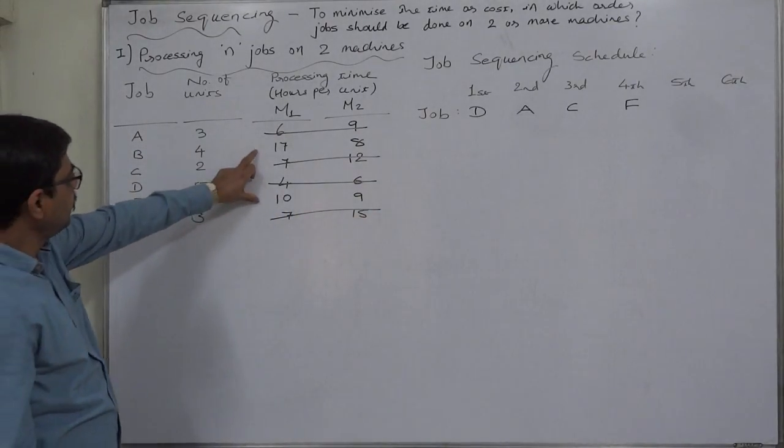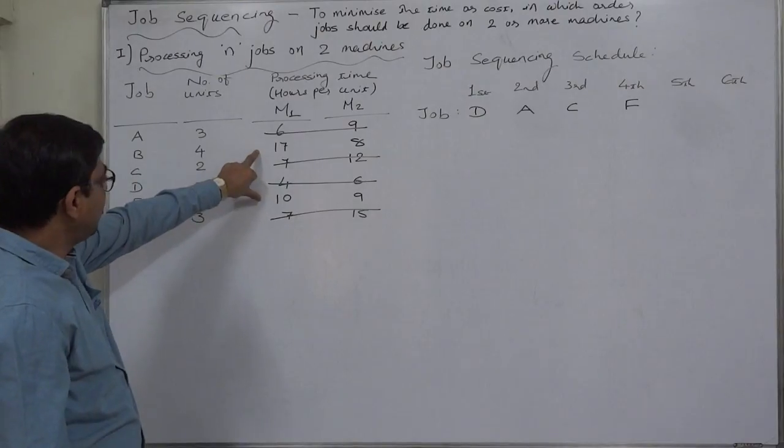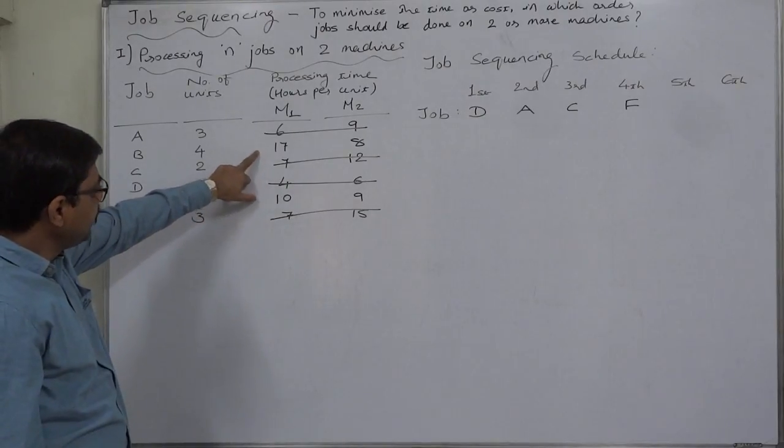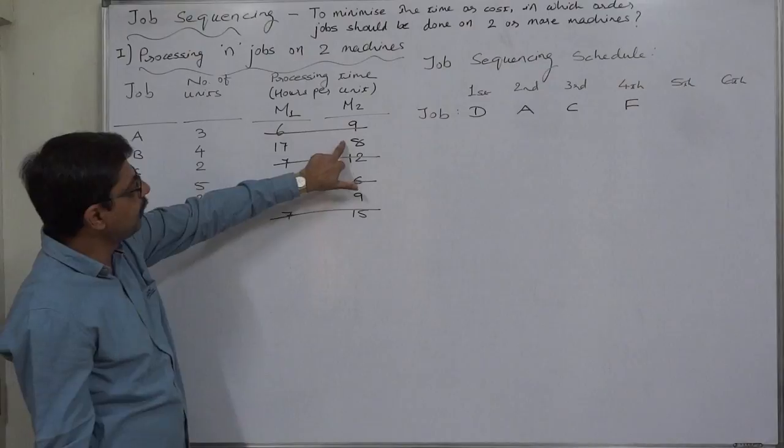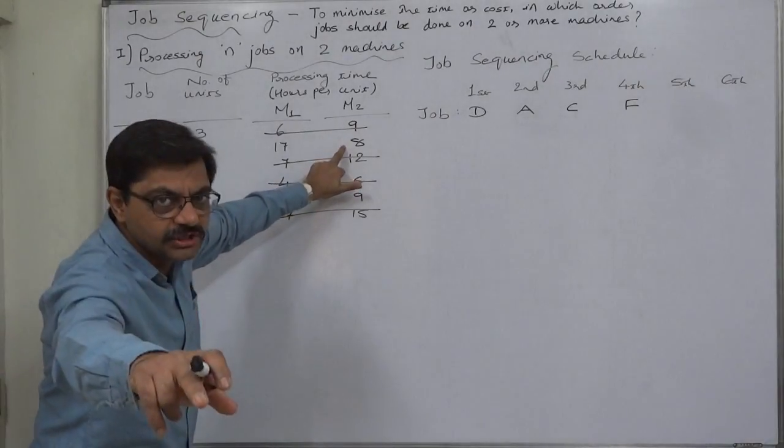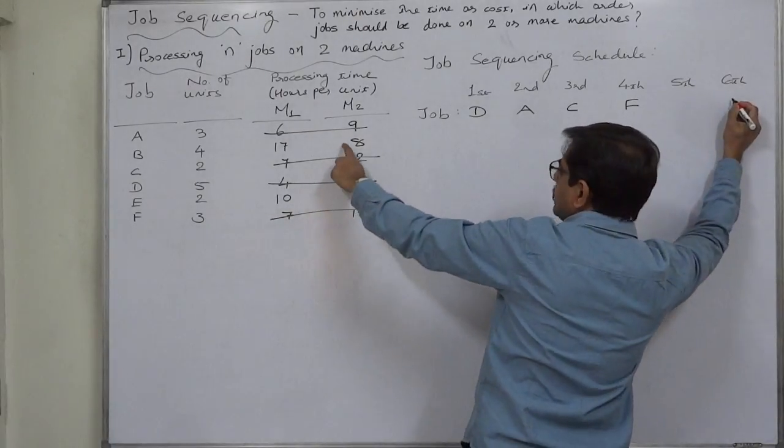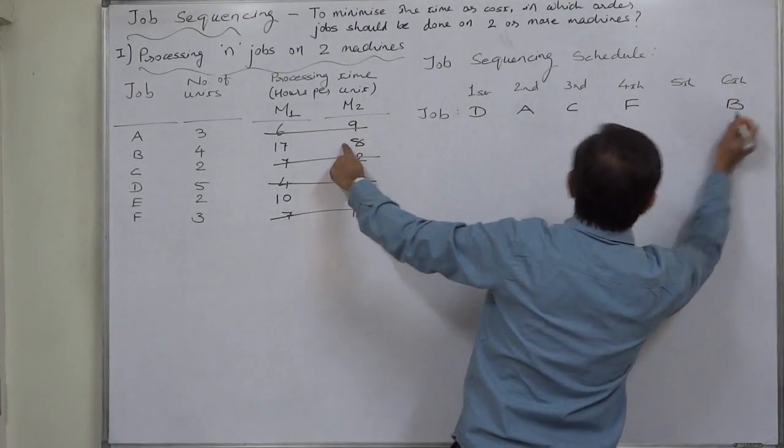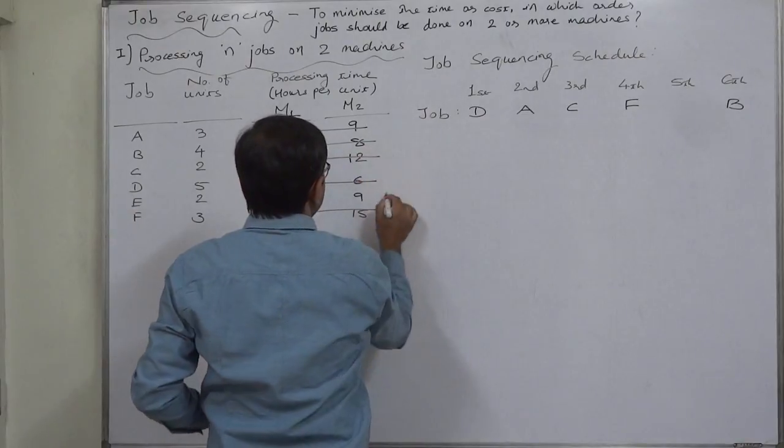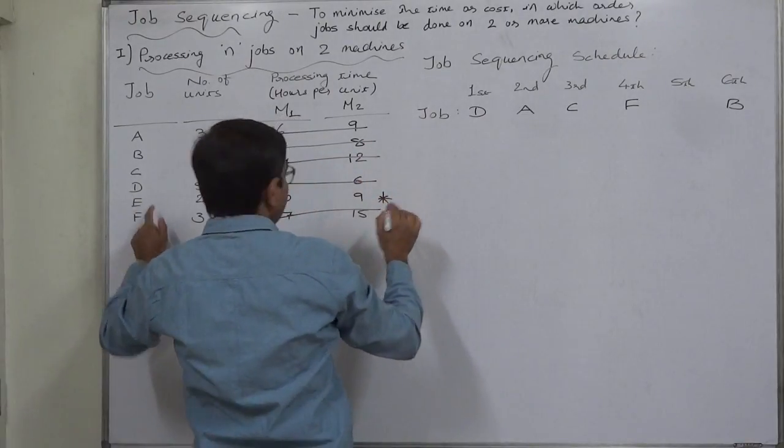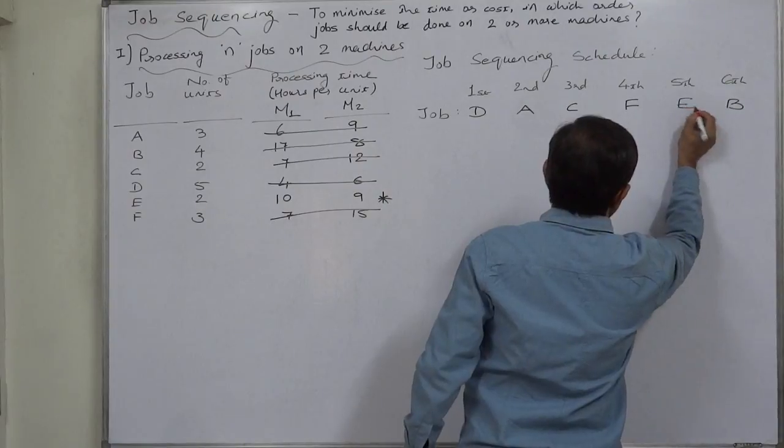Now the remaining two jobs are B and E. B has a minimum time of eight, but on machine two, so B will be placed on the right-hand side. The last remaining job is E, which will be placed in the fifth position.